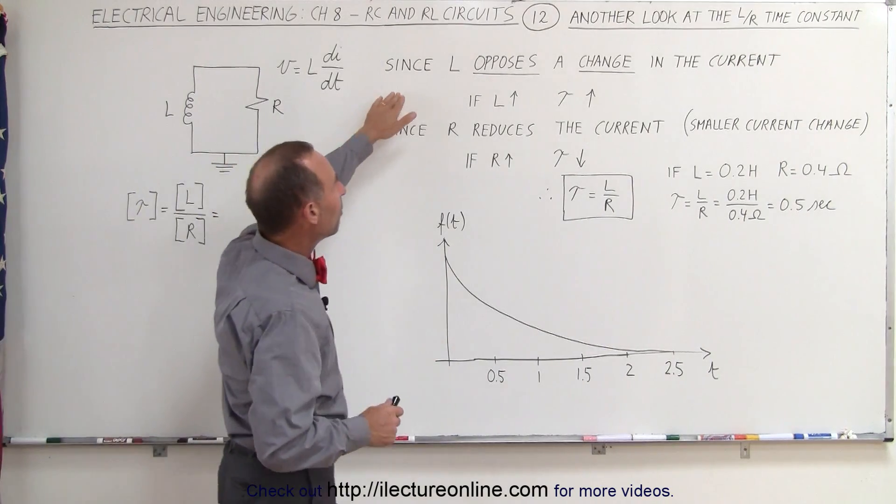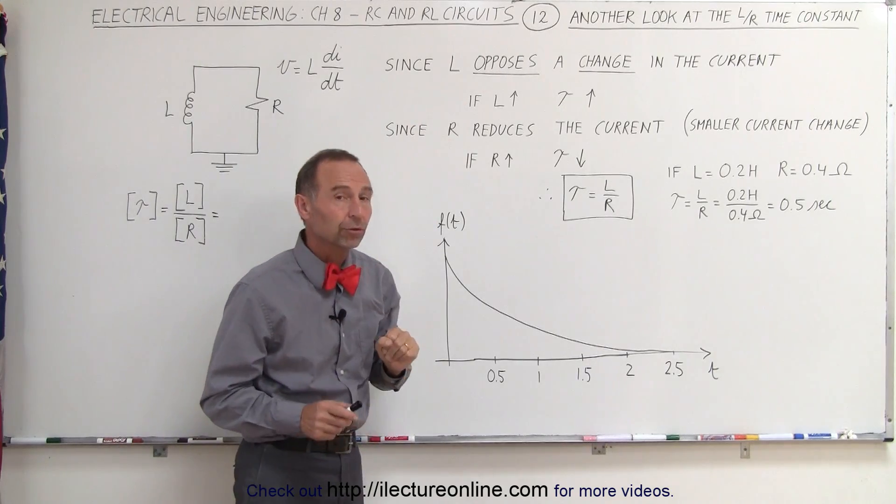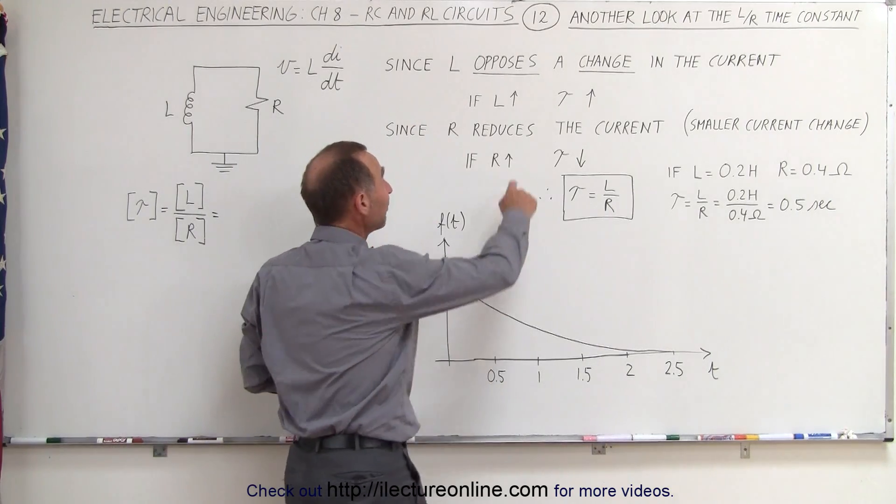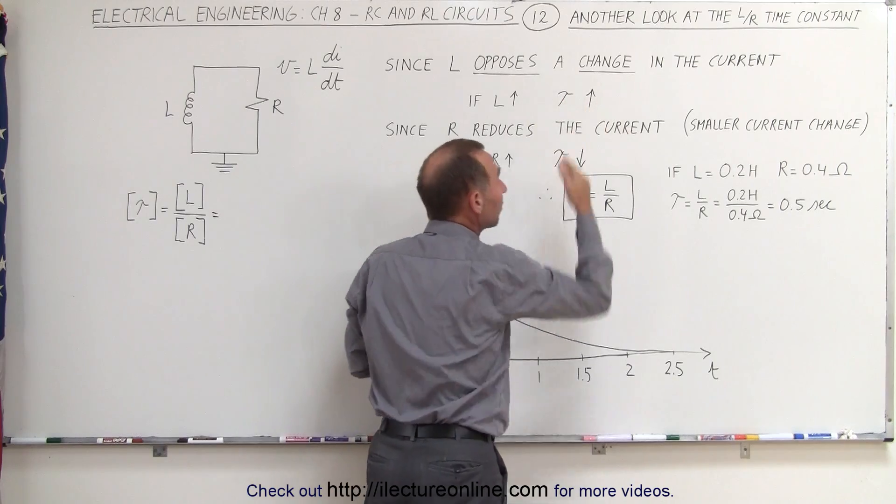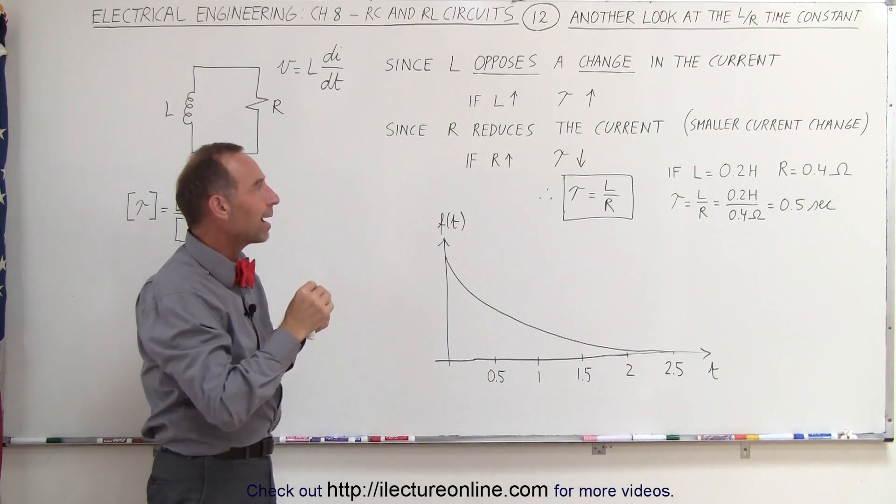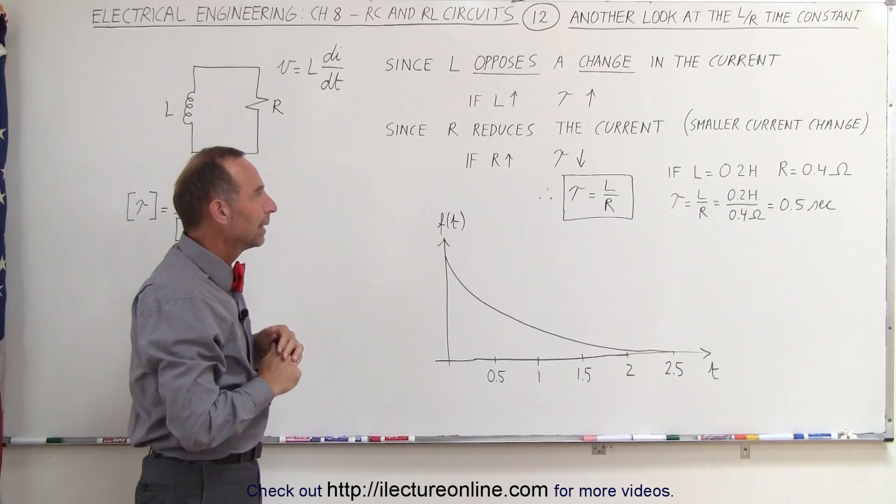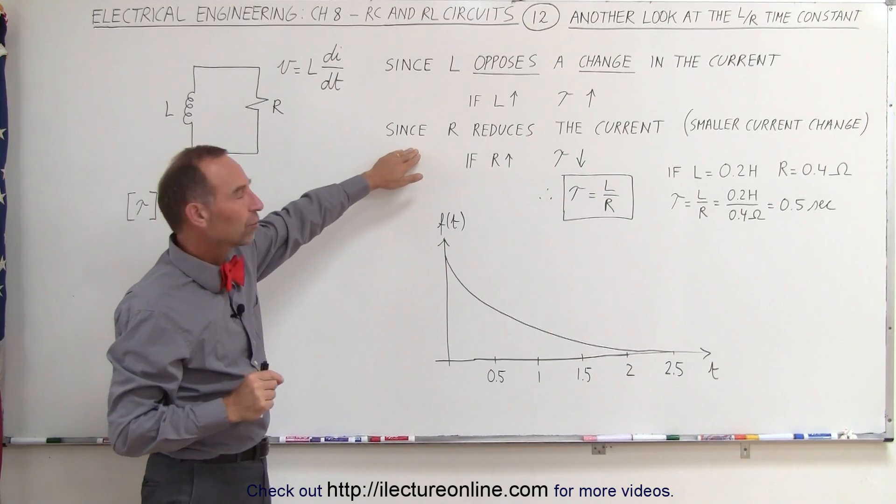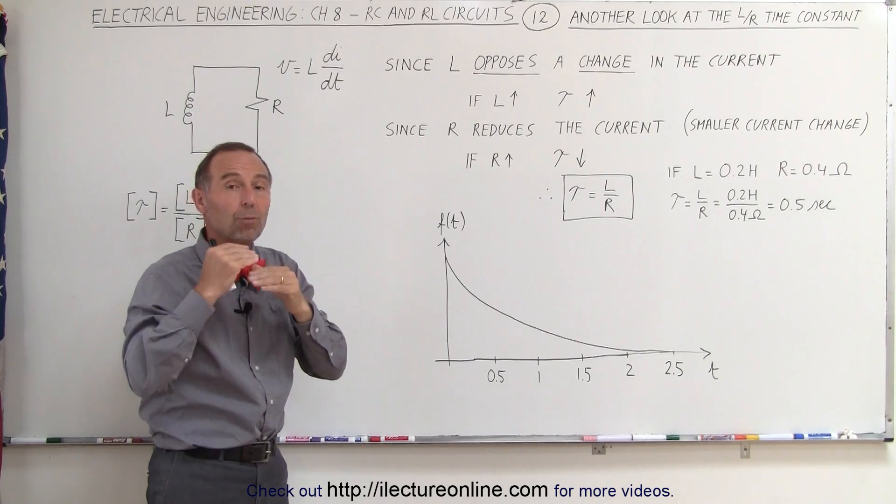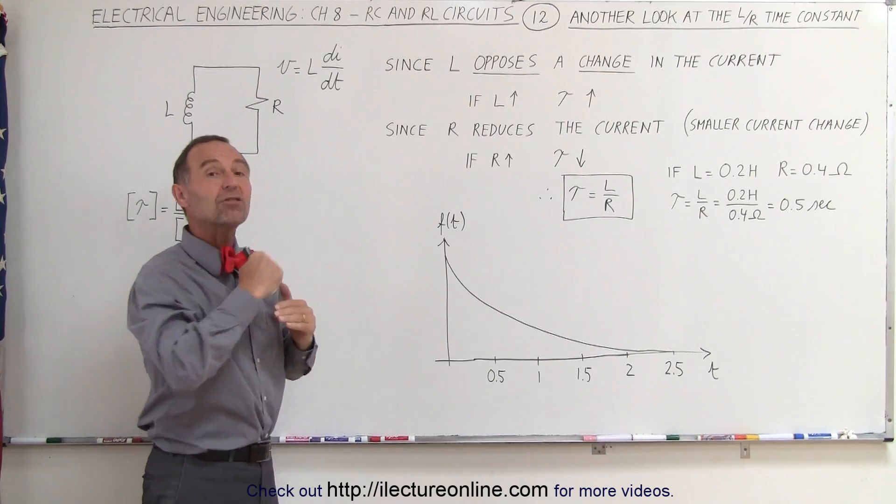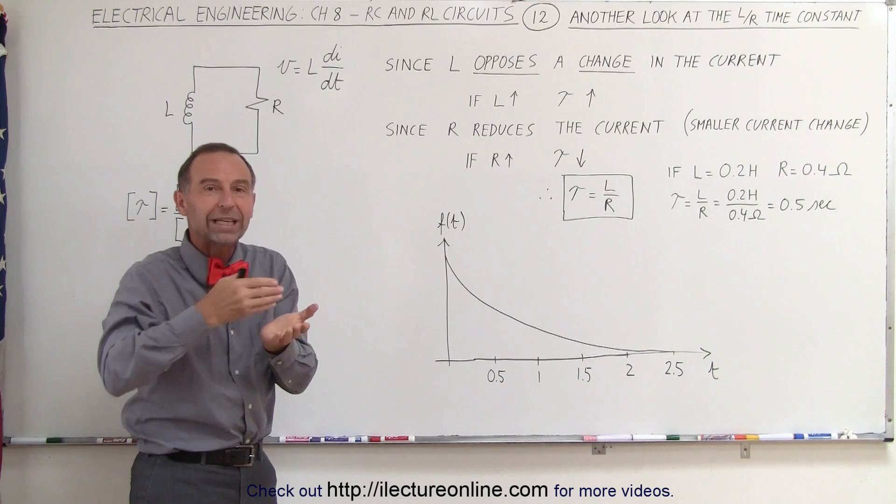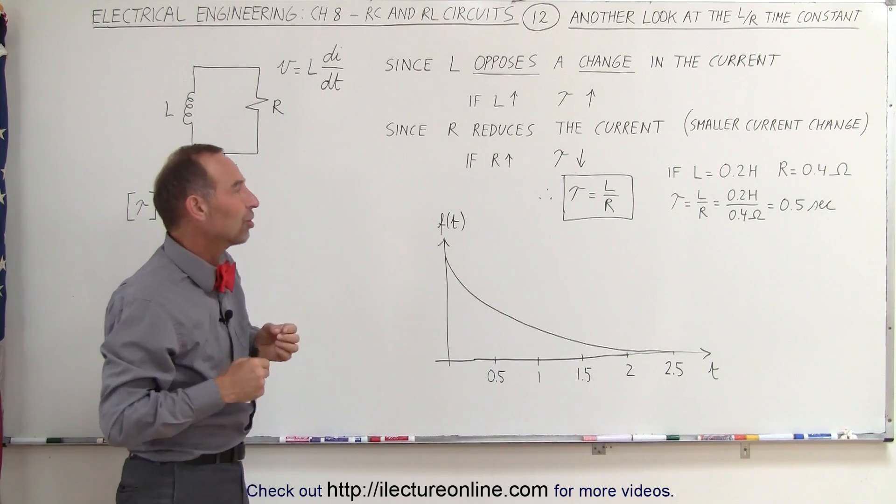Well, L opposes a change in the current. That means that if L is increased, the time constant is increased because it will take a longer period of time for the steady-state current to be reached. R reduces the current in a circuit, so therefore there'll be a smaller difference in the change of the current. If there's a smaller difference in the change, we'll get more quickly through that change.